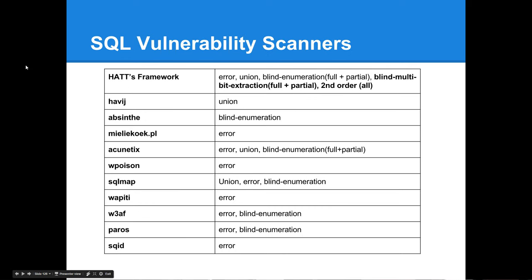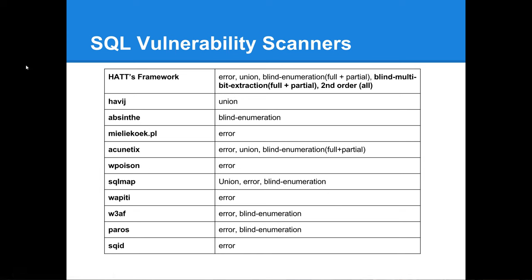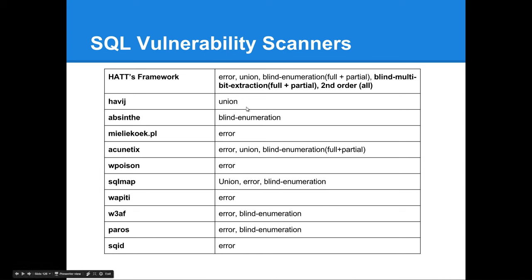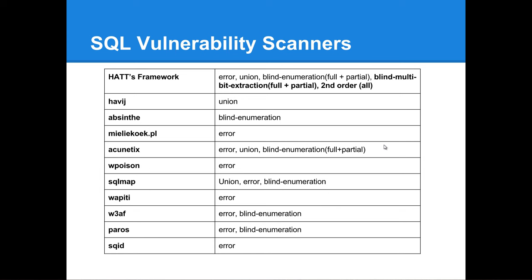There are vulnerability scanners that detect some categories of SQL injection, but most do not detect all. A framework is being released that thoroughly checks for every single category including second-order instances and recursively checks and detects. As far as known, other scanners do not recursively scan for second-order vulnerabilities, and when they do detect them, they are often miscategorized.